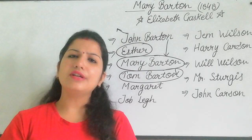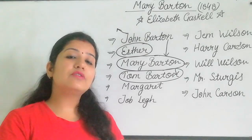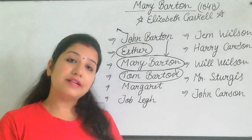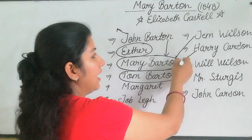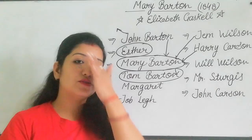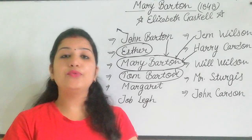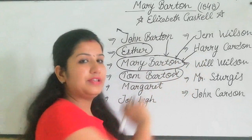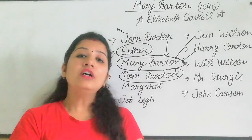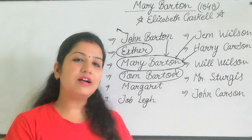Mary has a strong reputation and two men are attracted to her. One is Jem Wilson and the other is Harry Carson. Harry Carson is a wealthy man. Mary realizes she loves Jem Wilson and wants to marry him, though she had initially been attracted to Harry Carson. She tries to escape from Harry Carson's advances.